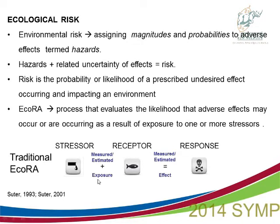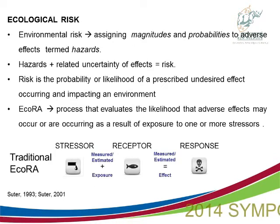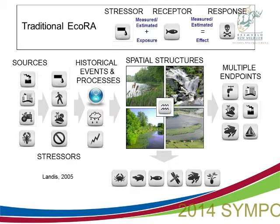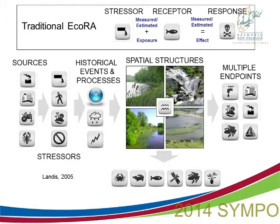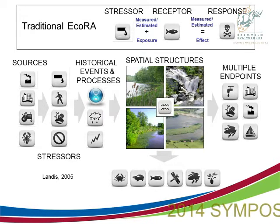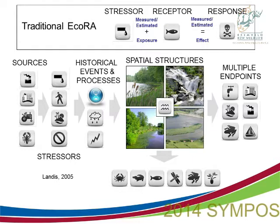There's a traditional risk assessment approach which considers a type of stressor, its receptors, and then the response. It's usually out of context of environment, but we have problems with multiple sources, historical events, dynamic ecosystems, unique and variable environmental conditions, and multiple endpoints. We're not only worried about the fish — we're worried about the frogs, the birds, the people, the fishermen, and ecosystem services and ecological infrastructure.